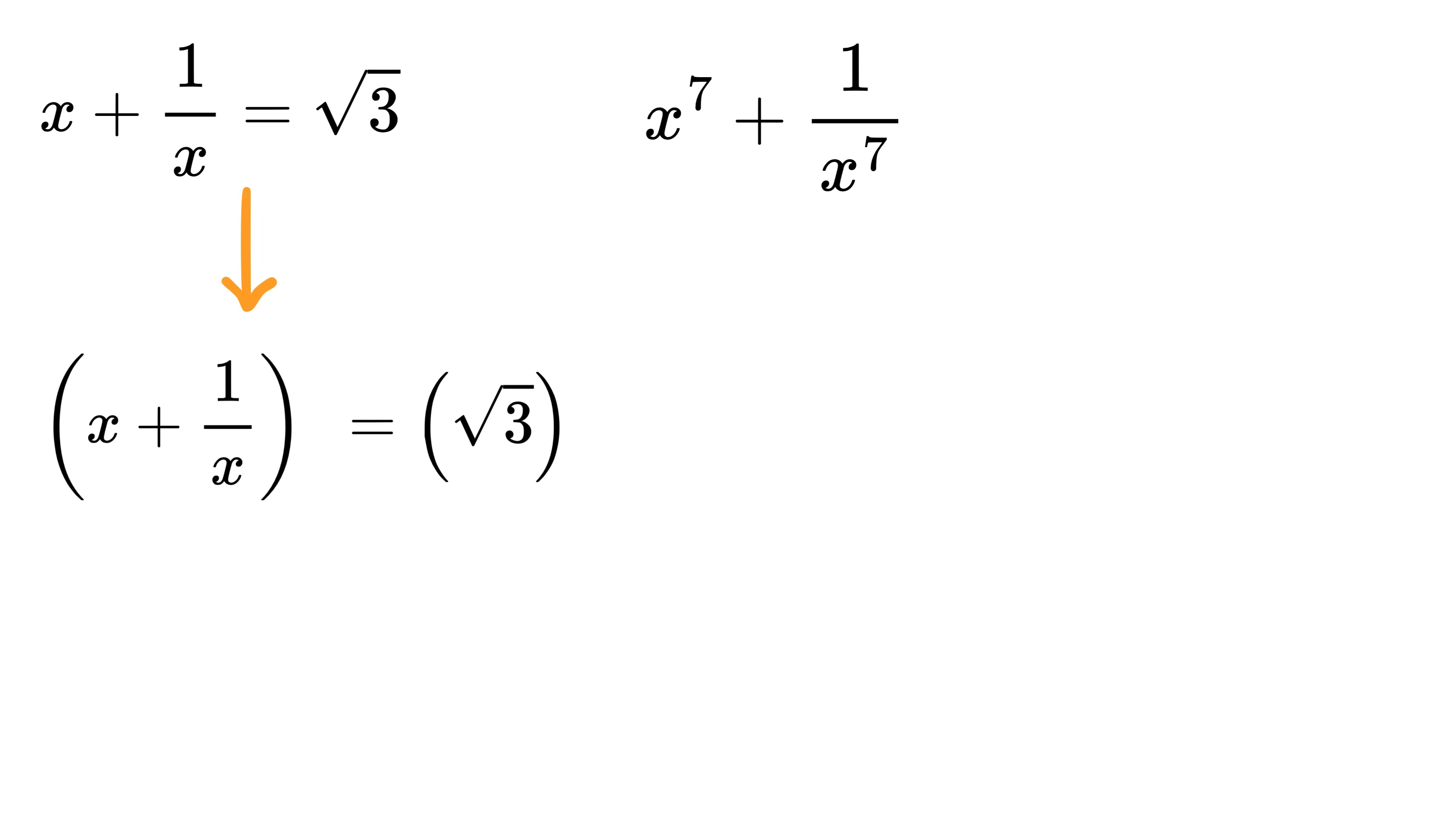Instead, we're going to solve this using a clever trick. First, cube both sides of the original equation. We use the formula for the cube of a sum - that is (a+b)³ = a³ + b³ + 3ab(a+b).